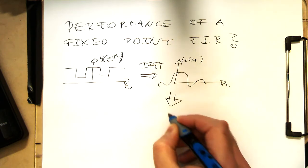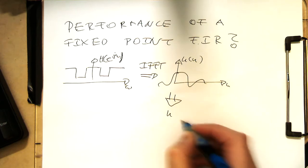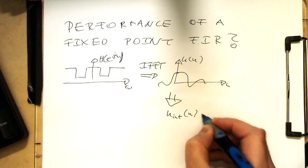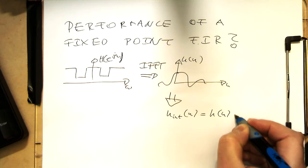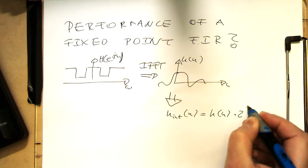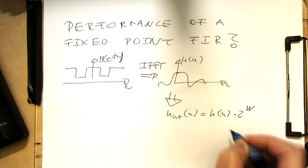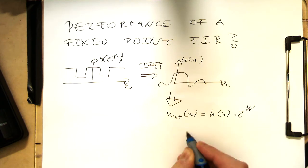We had the H here. Let's call this here H int of N equals to H of N multiplied by 2 to W, not omega. And so, that's our quantized version here.